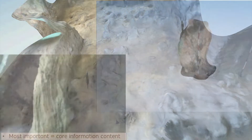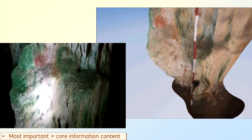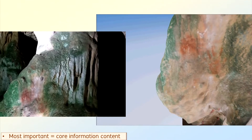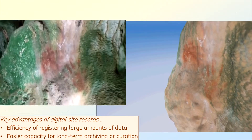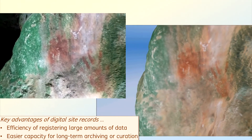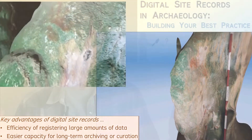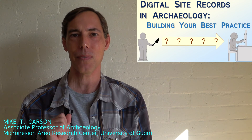I should stress that the most important part of a site record is the core information content, regardless of whatever might be the most recent or most popular recording technology. In this regard, the two key advantages of digital site records involve the efficiency of registering large amounts of data and the easier capacity for long-term archiving or curation. The possibilities of digital site records certainly will continue to change with new technologies and opportunities. What aspects do you find interesting or challenging, and what would you like to see in digital site records? Thank you for watching here.